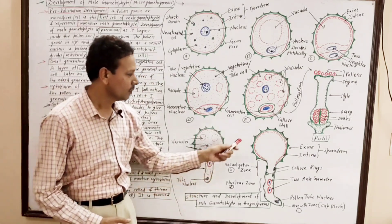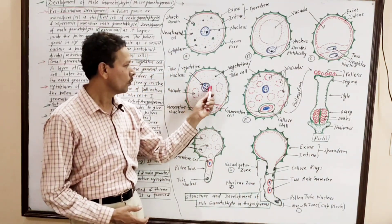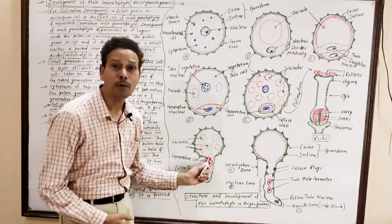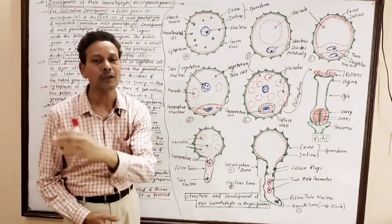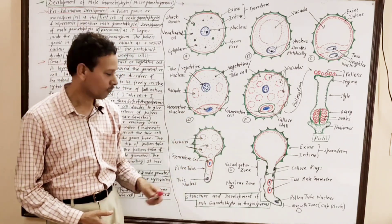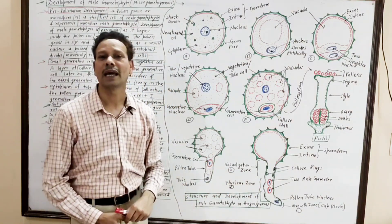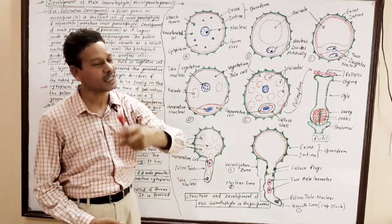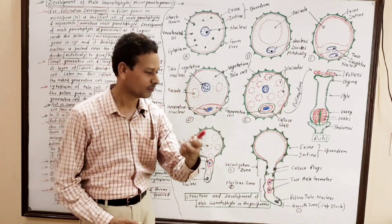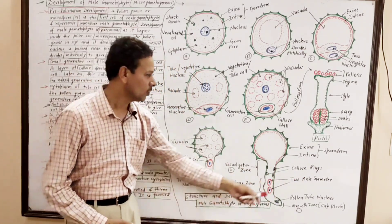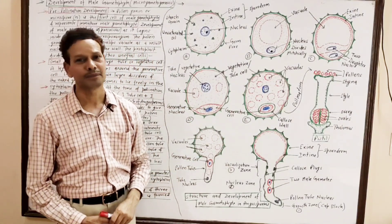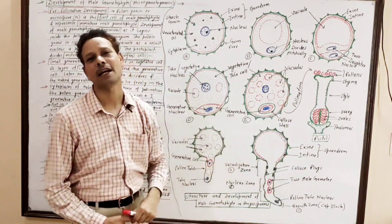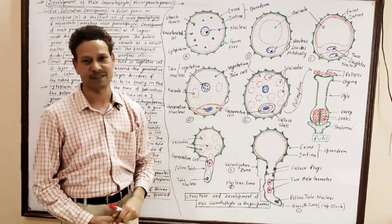In the pollen tube, the terminal part possesses the vegetative or tube nucleus. The generative cell also moves down into the pollen tube. Finally, the generative cell undergoes the second mitotic division to give rise to two male gametes. This entire structure, in which two male gametes or micro gametes are present, is the male gametophyte. In this male gametophyte, one pollen tube nucleus and two male gametes are present — so it is a three-cell stage.